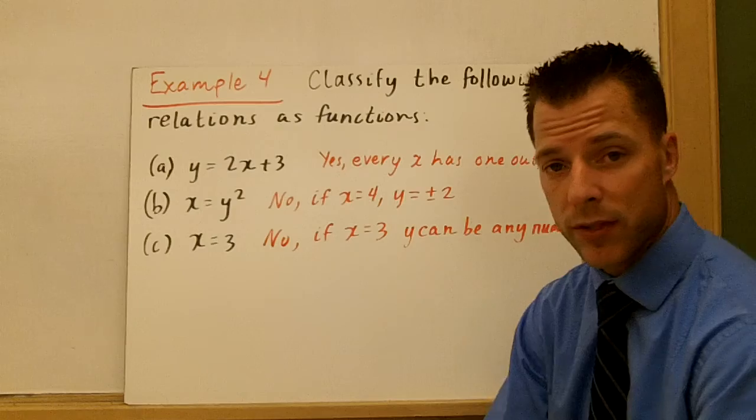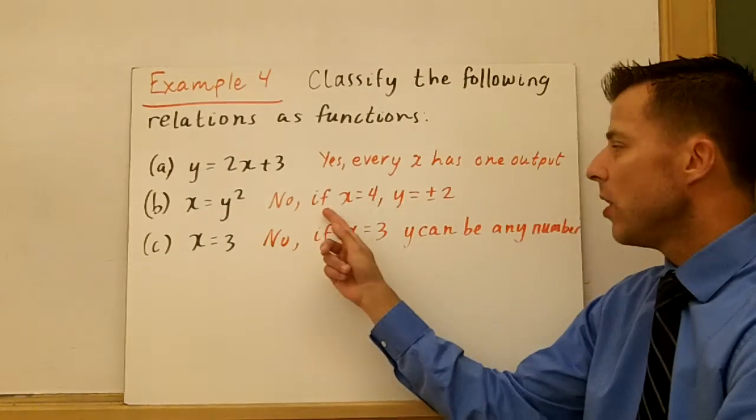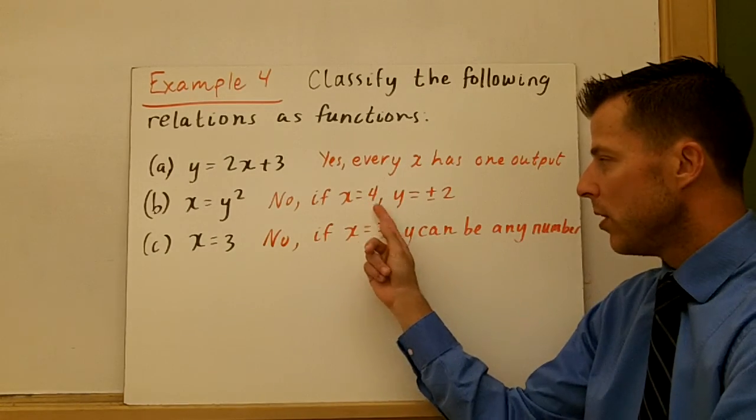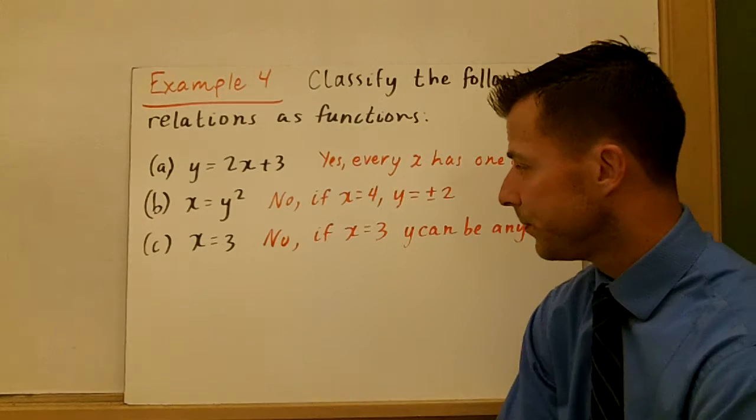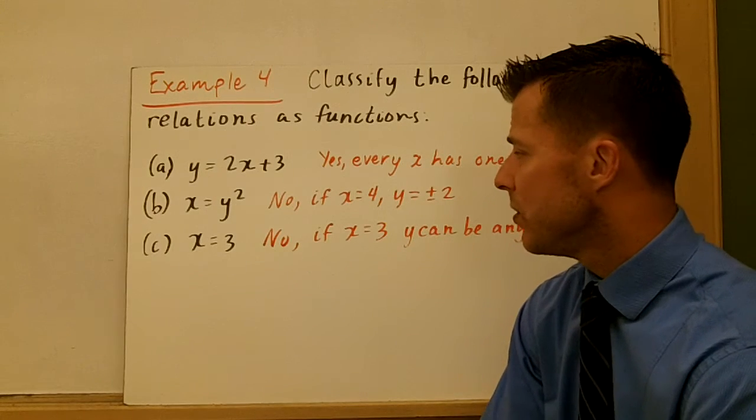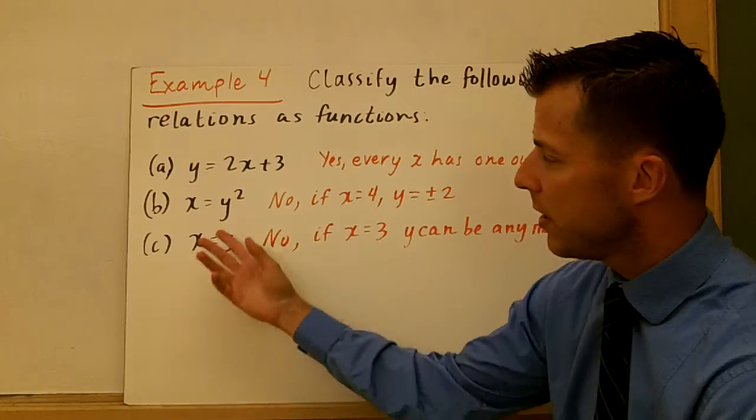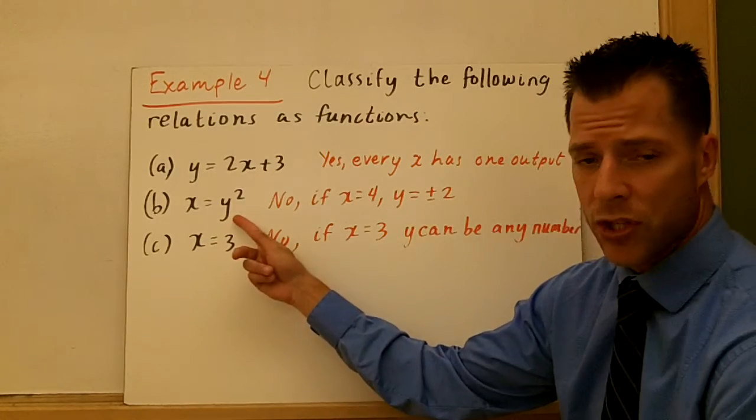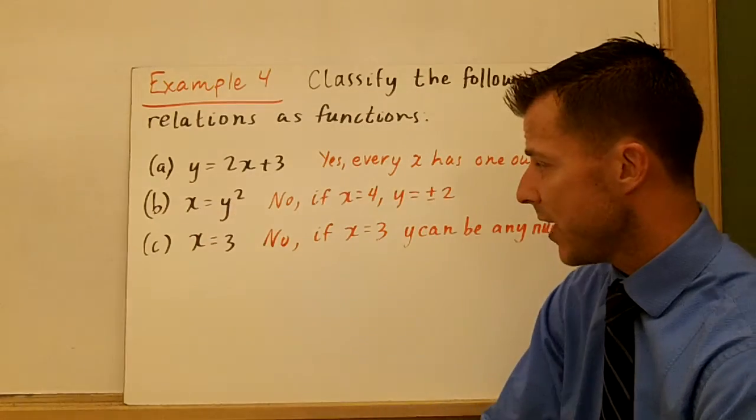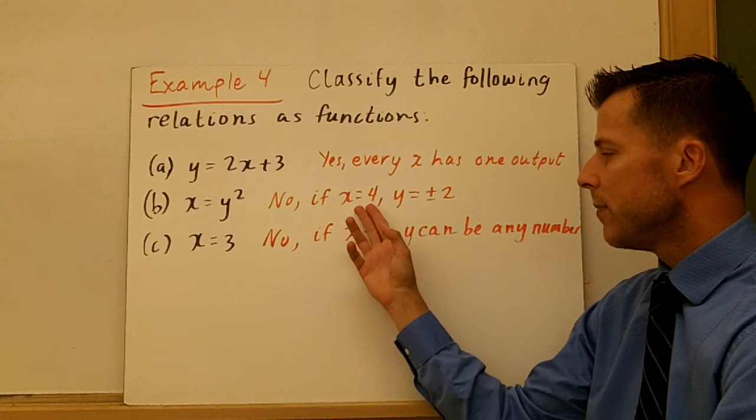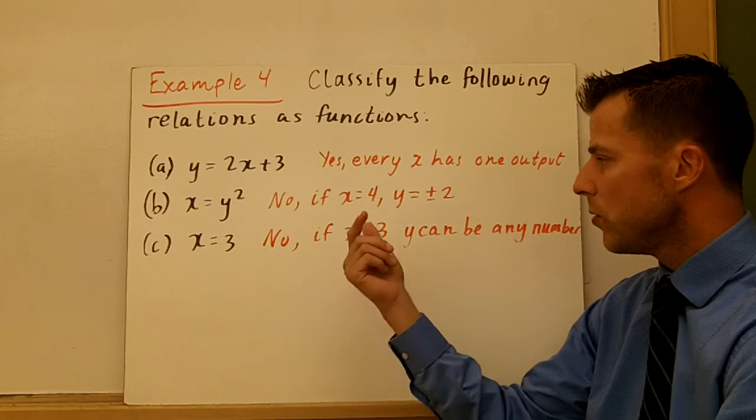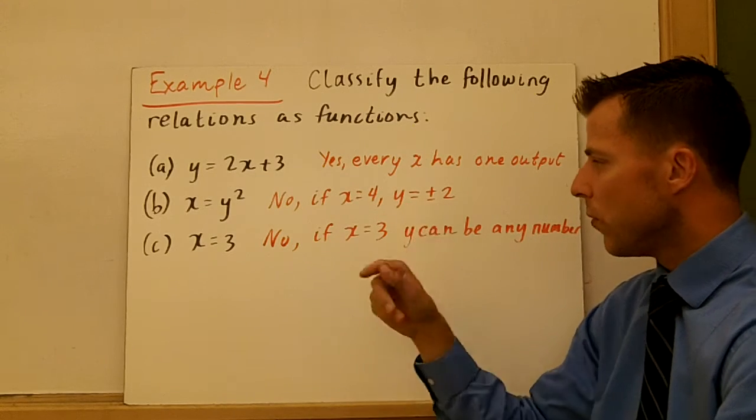In part B here, x equals y squared. This is not going to be a function because, notice, if you let x be 4, y could either be plus or minus 2. So you could have two values there. One of the ways you could do this, if you actually solve this for x, it could be plus or minus x. So that's the big thing here. You can get two output values for y.